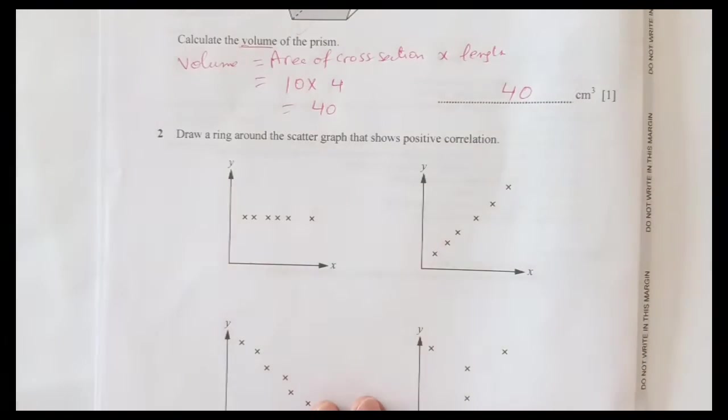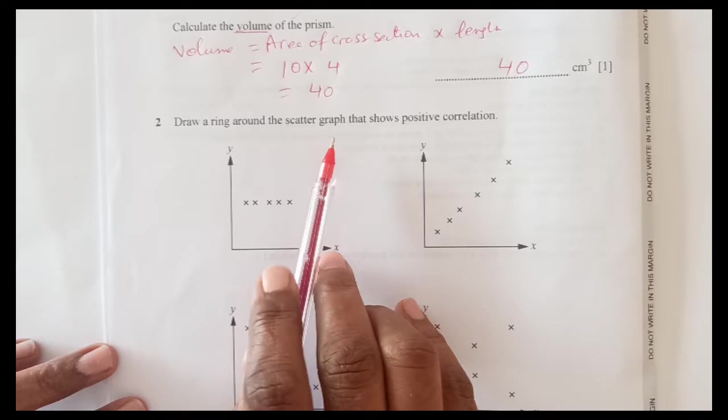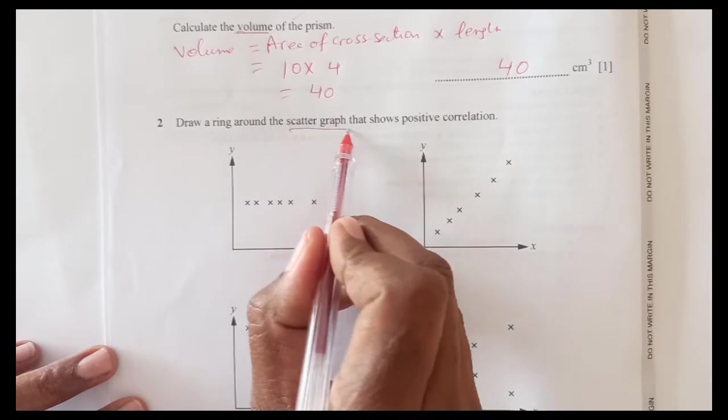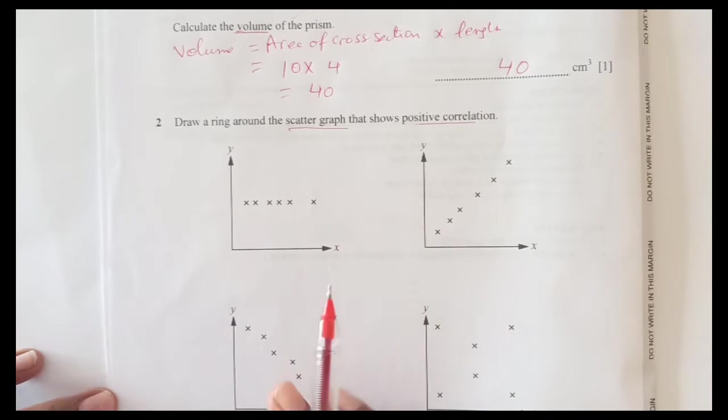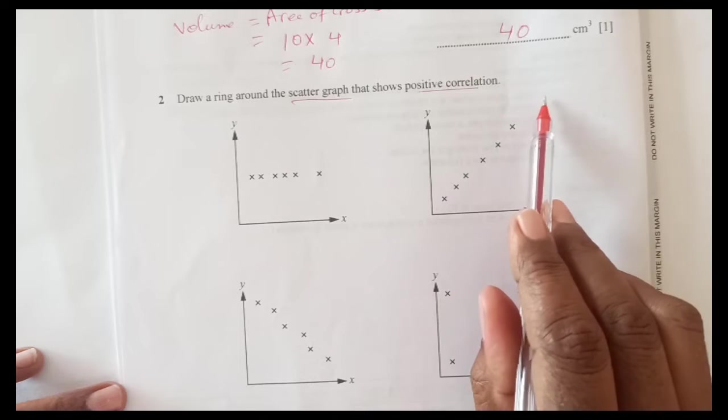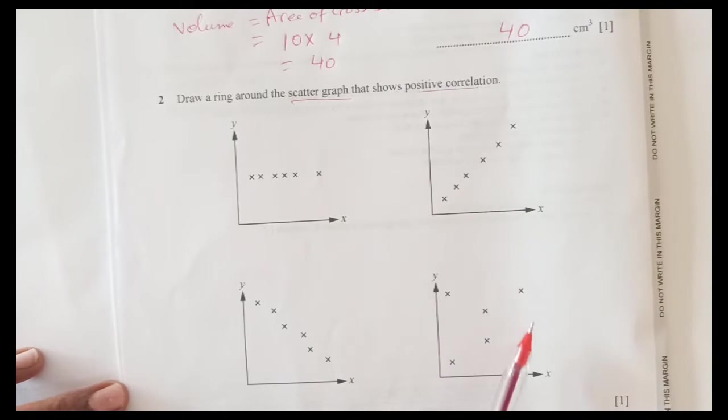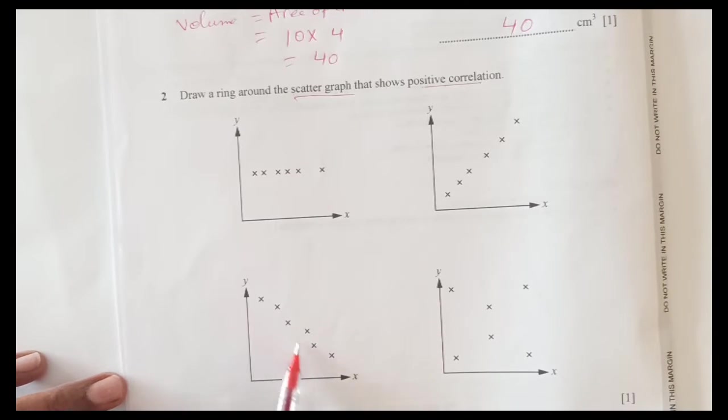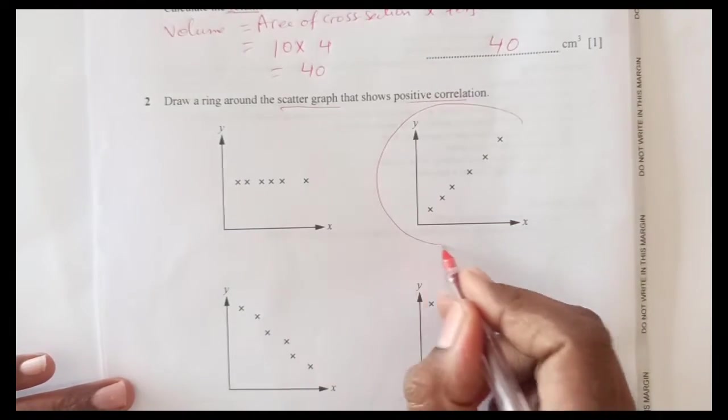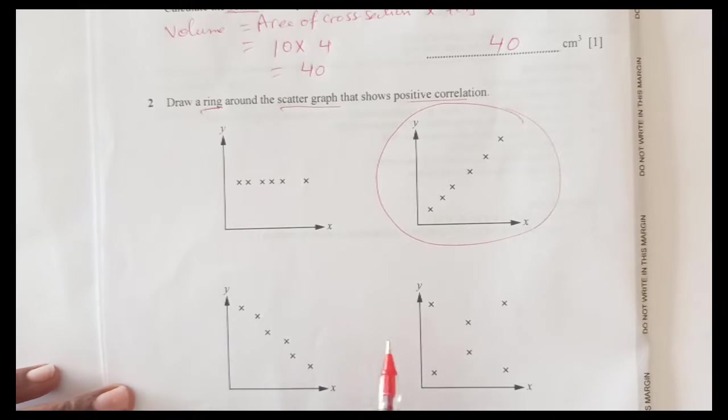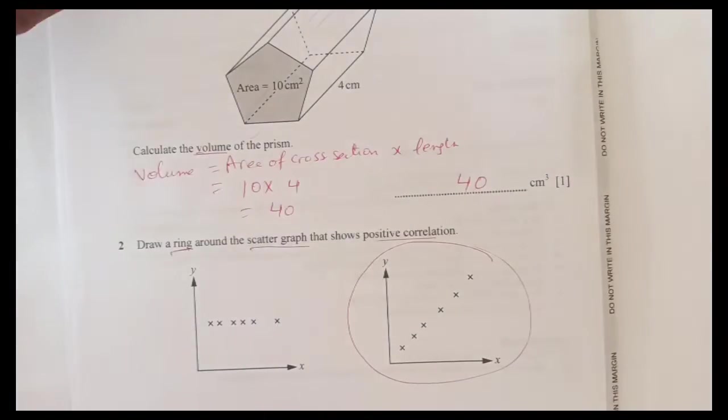Number 2: draw a ring around the scatter graph that shows positive correlation. Positive correlation - this is constant here, no correlation. This is going upward, so this is positive. This is scattered, no correlation. This is going downward, this is negative. So this one we need to put a ring. We need to draw a ring around that graph. This is positive.